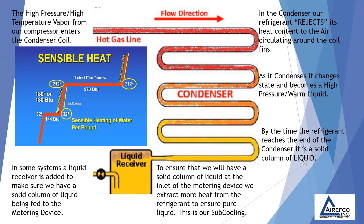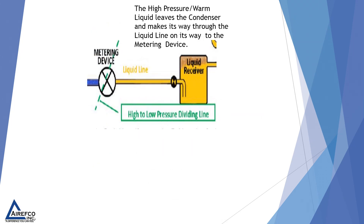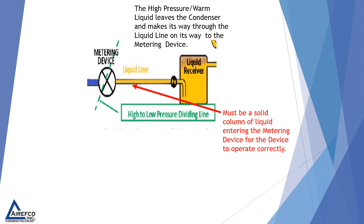In some systems, a liquid receiver is added to make sure we have a solid column of liquid being fed to the metering device. The high-pressure, warm liquid leaves the condenser and makes its way through the liquid line on its way to the metering device. The liquid line must be a solid column of liquid entering the metering device for the device to operate correctly.